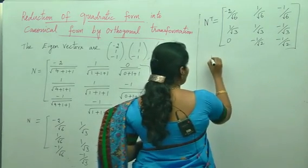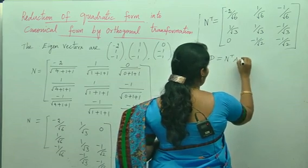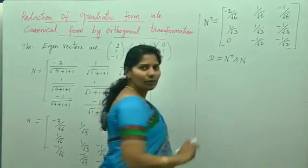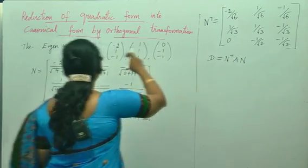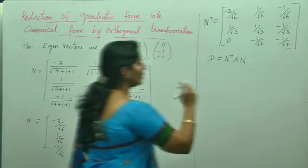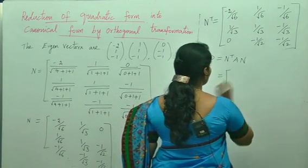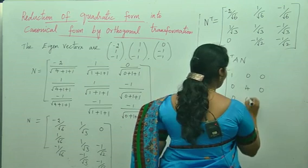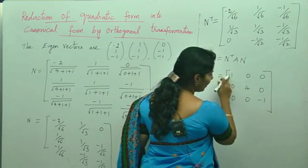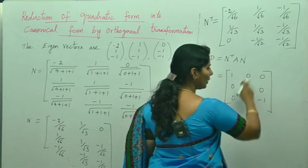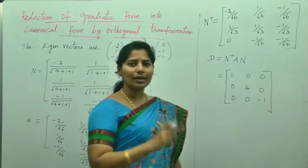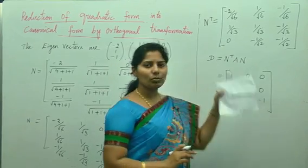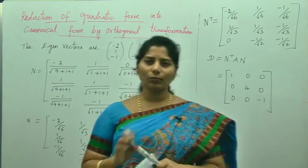The final matrix D equals N-transpose times A times N. We know N-transpose, A is the given matrix, and N is the normalized modal matrix. These three give the final answer: the diagonal matrix with entries minus 1, 0, 0; 0, 1, 0; 0, 0, 4 — where only the diagonal elements (the eigenvalues) are present and all other elements are zero. This is how you reduce the quadratic form into canonical form.